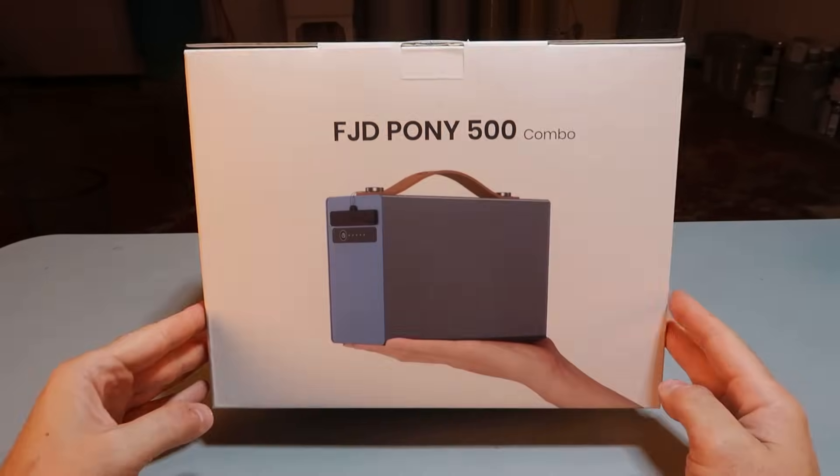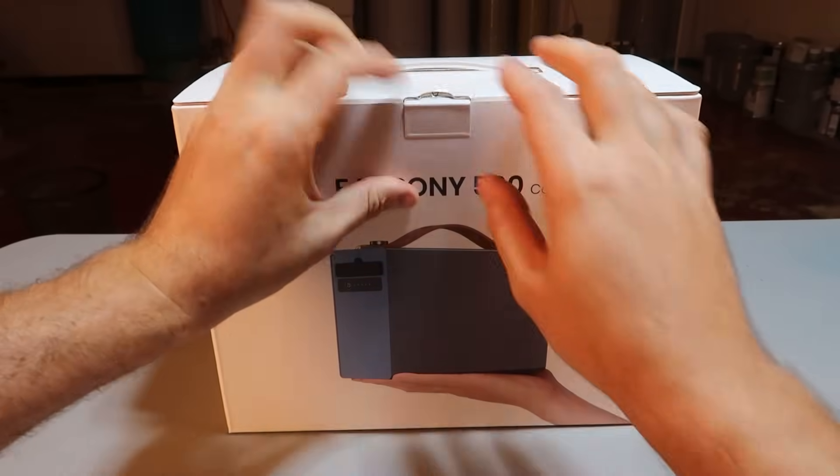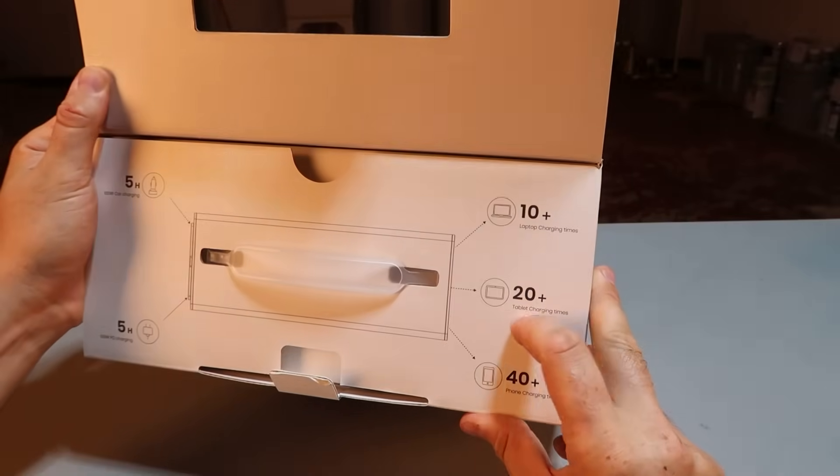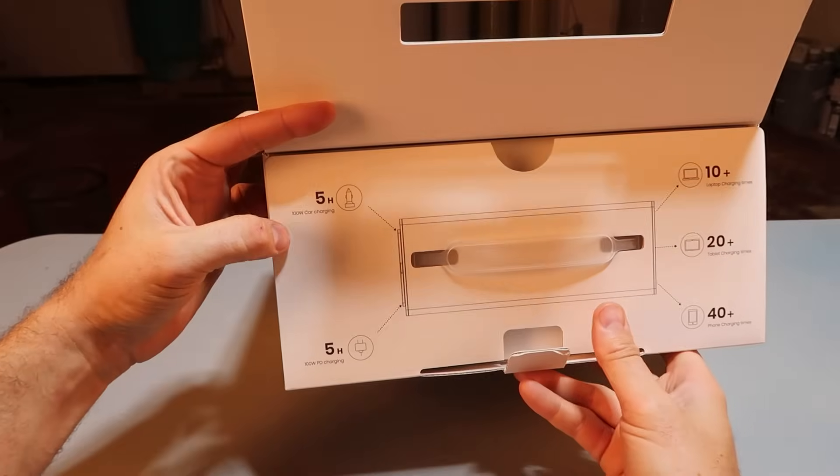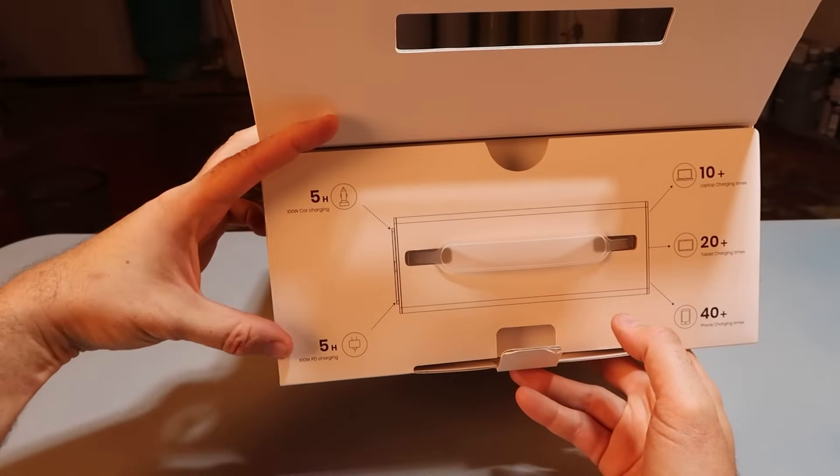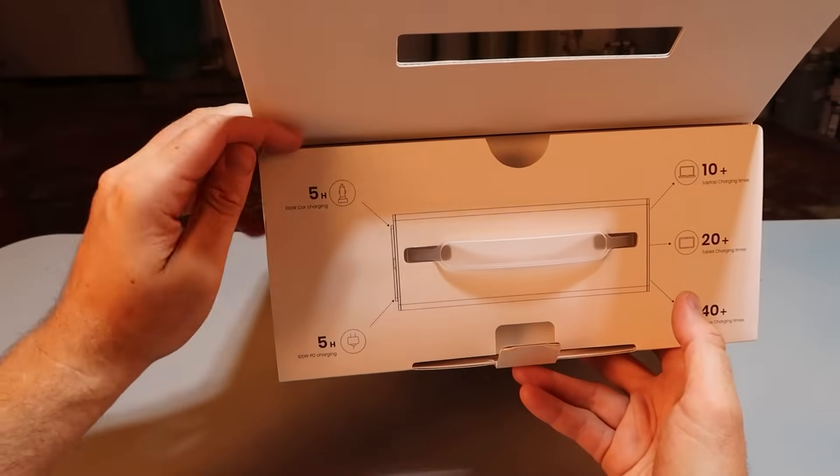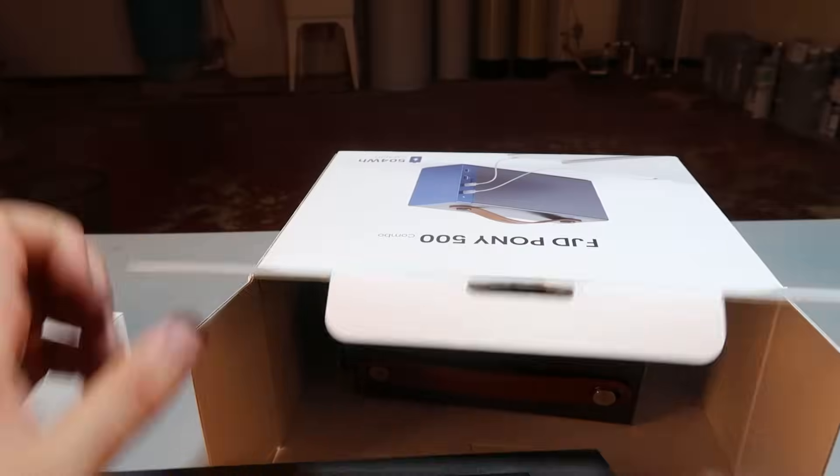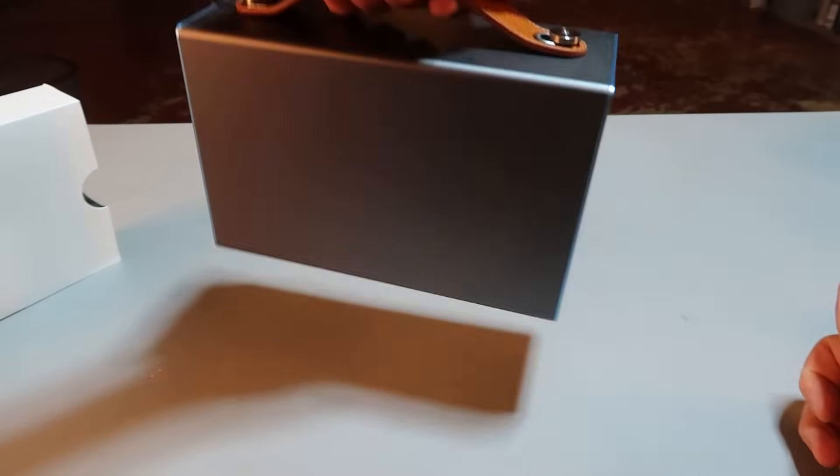FJD Pony 500 Combo. Looks like one of those miniature power banks, but also nothing miniature about that. Let's open it up. Laptop charging up to 10 plus times, tablets 20, phone 40 charges. 100 watt car charging so I can charge it while I'm driving. 100 watt PD charging five hours, so only five hours to recharge it. Wow, it is a lot smaller than the box, most of it is just packaging. Leather holder, it's quite heavy, I love it.